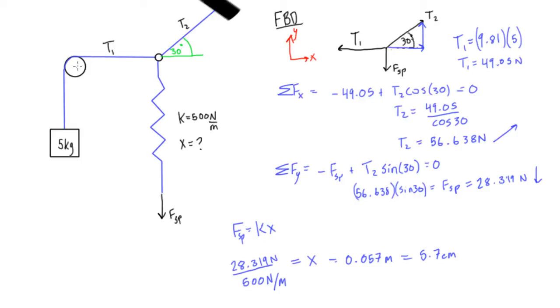we're going to have to pull down on fsp, we're going to have to pull down on the spring with 28 newtons, and that will mean that that spring gets stretched out 5.7 centimeters.